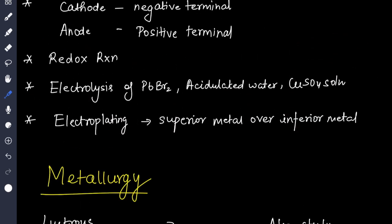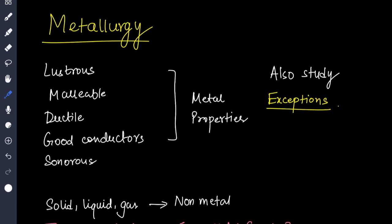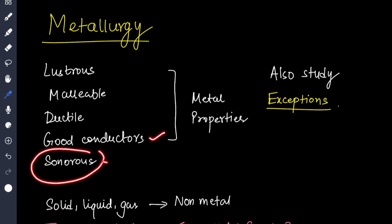Then metallurgy, difference between metals and non-metals, the properties. Basically lustrous, malleable which can be beaten into sheets, ductile which can be beaten into wires, good conductors of heat and electricity, sonorous that is they produce sound when beaten. You have to study the exceptions as well.